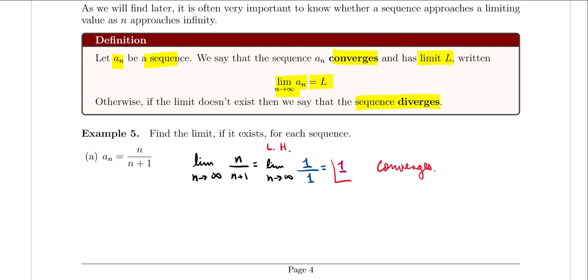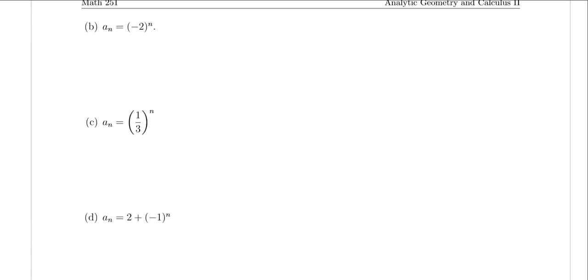Let's take a look at another example. For the second sequence, we have a_n equals negative 2 raised to the n. This one could be trickier or easier depending on how you look at it. I know right from the get-go that this particular sequence is not going to have a limit — it will diverge.